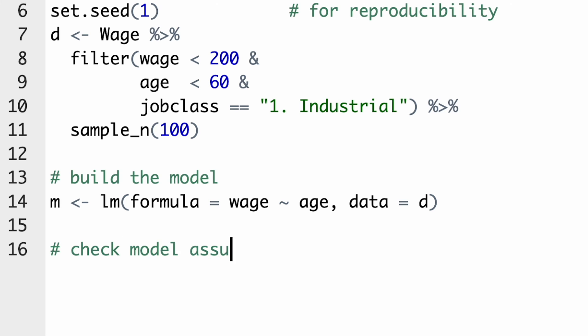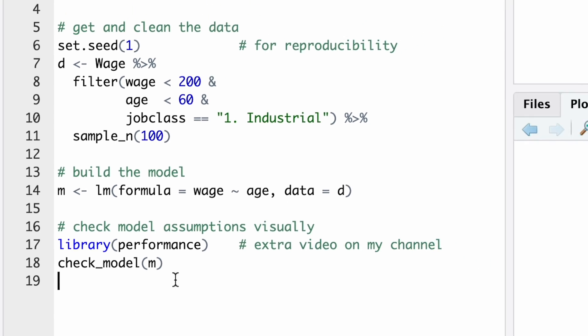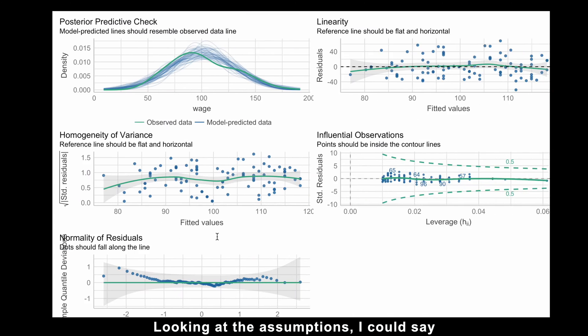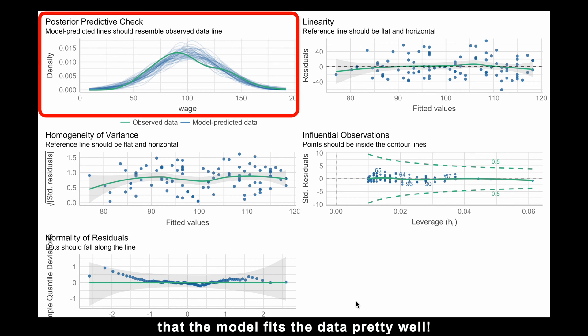After building the model, we need to make sure the assumptions are satisfied. Otherwise, we couldn't trust our model. The check_model function from the performance package is so intuitive and powerful that once you've used it, you cannot unlearn it. Believe me, I use it every time I model. Looking at the assumptions, I could say that the model fits the data pretty well.